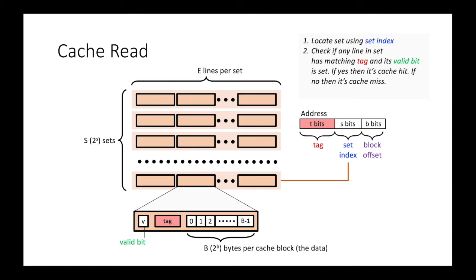In the case of a cache hit, the final step is to use the block offset bits to locate the data within the cache line.